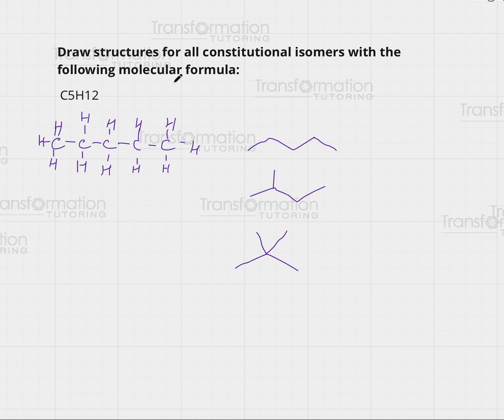So these are all of the constitutional isomers for C5H12. I have three constitutional isomers. I cannot do anything else and we have a five-carbon parent chain, a four-carbon parent chain, and a three-carbon parent chain here. This is Myelogi and I hope that you found this video helpful.